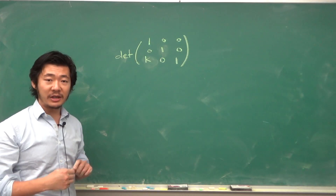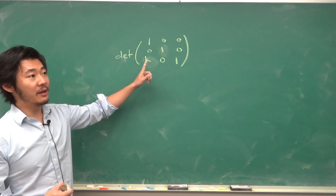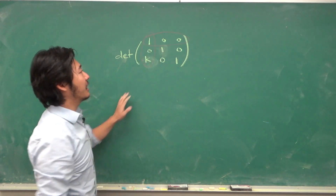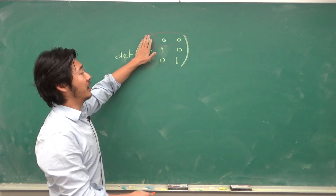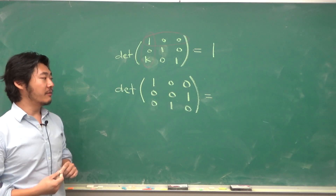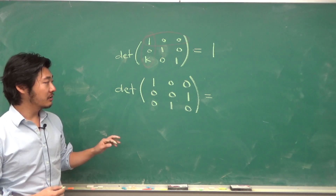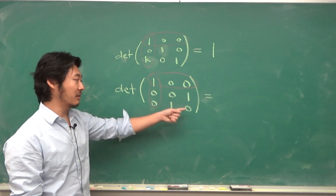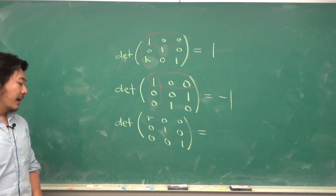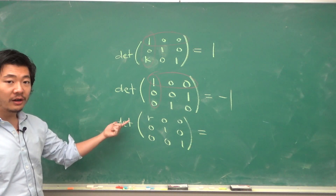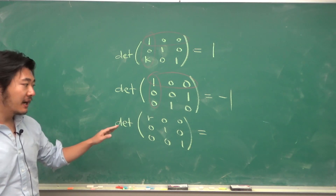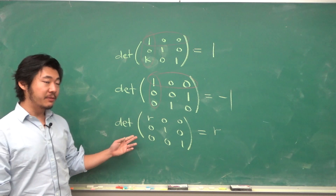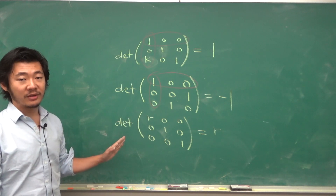Let's verify the determinant of each type of elementary matrix. For the type where you add k times one row into another — doing cofactor expansion along the row with a single 1 — you only need that one column, giving 1 times 1, so the determinant is 1. For interchanging two rows, cofactor expansion gives 1 times the determinant of the submatrix 0, 1 = negative 1. And if you scale a row by a non-zero number r, the determinant is r times 1 times 1 = r, using the product of diagonal entries. So as long as you keep track of the row operations, computing the determinant of a larger matrix becomes much easier.